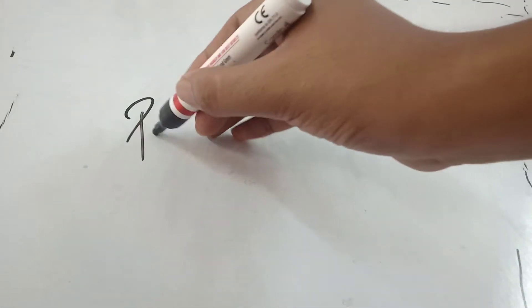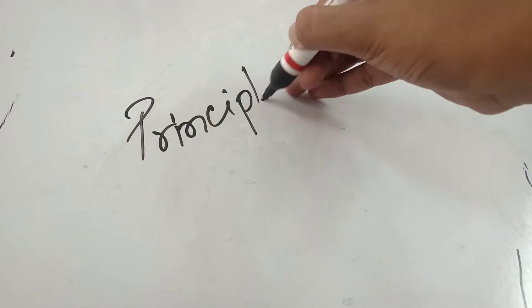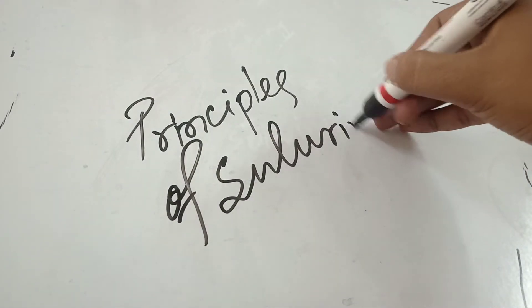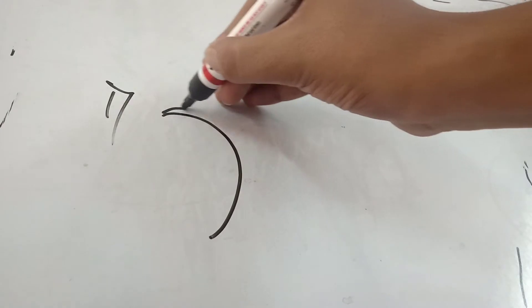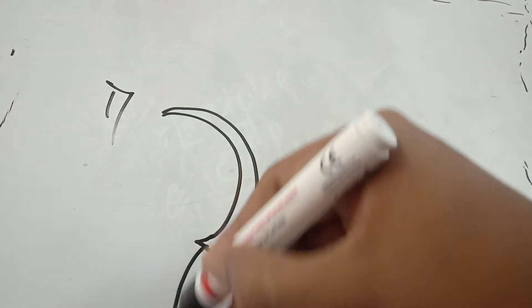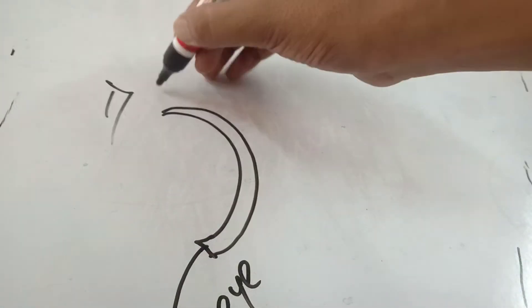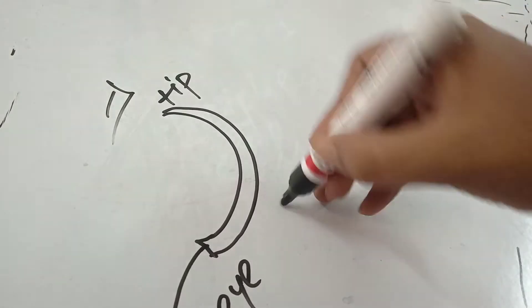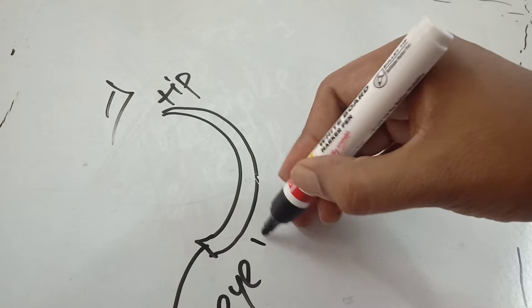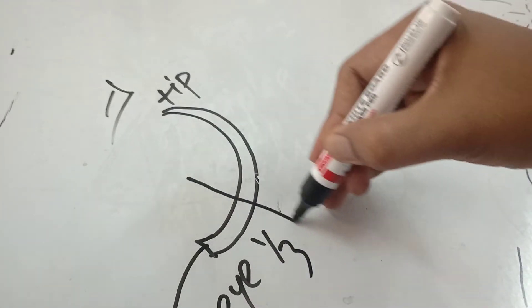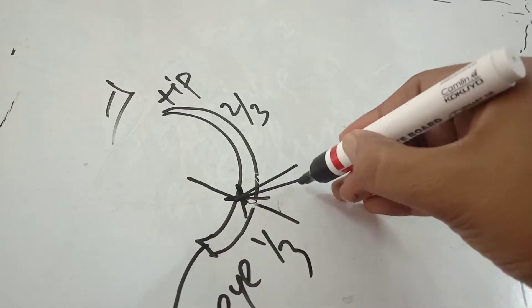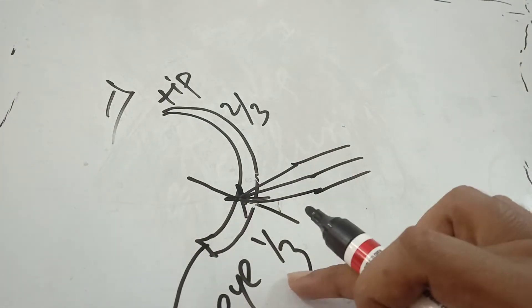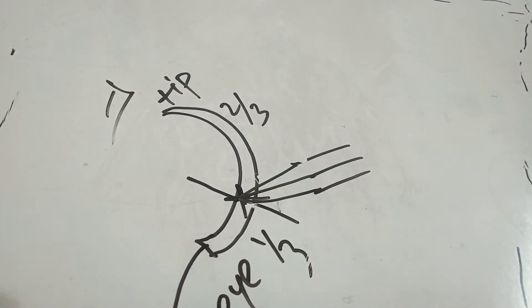Today we will discuss the principles of suturing. The first principle is where to grasp the needle. This is your eye, this is your tip. You have to grab the needle one third distance from the eye and two thirds from the tip. That means in this position you have to grab it with the needle holder. One third from eye and two thirds from tip.